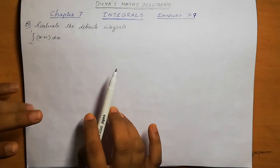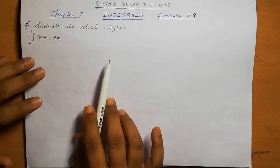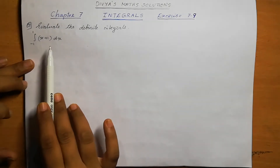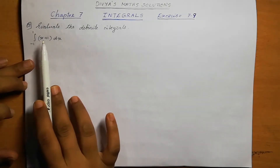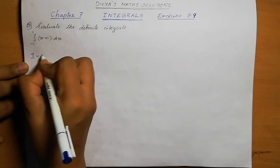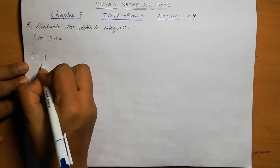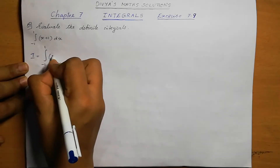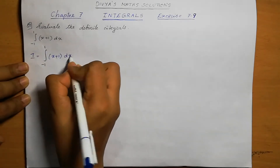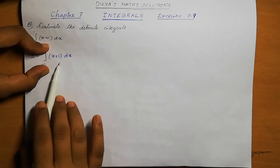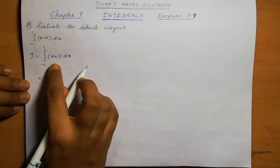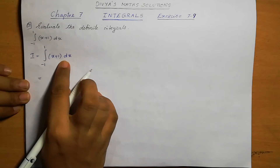Question number 1. Evaluate the definite integral: integral minus 1 to 1 of (x plus 1) dx. We are going to do the integration. We can write this as i equal to integral minus 1 to 1 of (x plus 1) dx. First we can write the integral answer — separate it as integral x dx plus integral 1 dx.